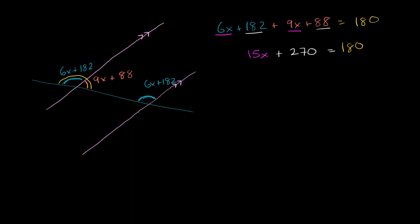If we subtract 270 from both sides, we get 15x is equal to negative 90. And now we can divide both sides by 15. Divide both sides by 15.